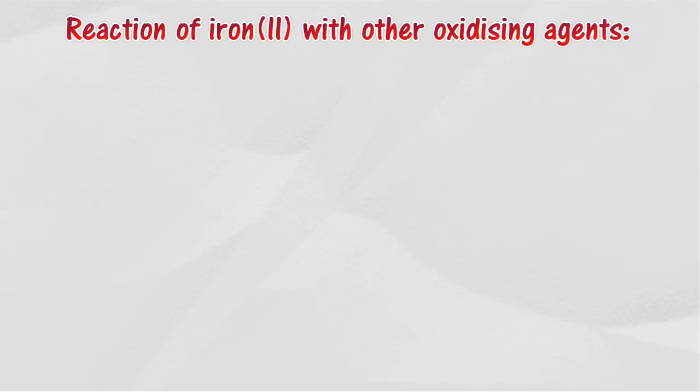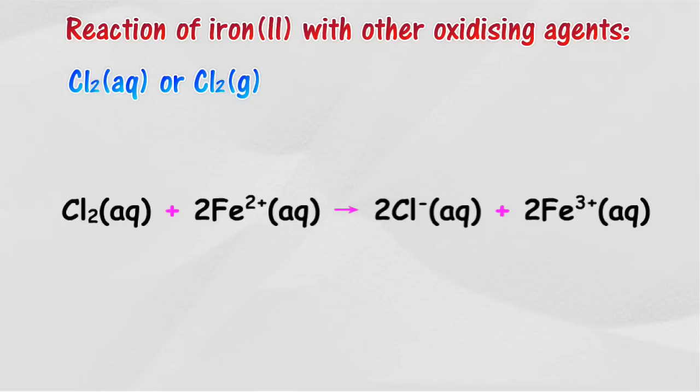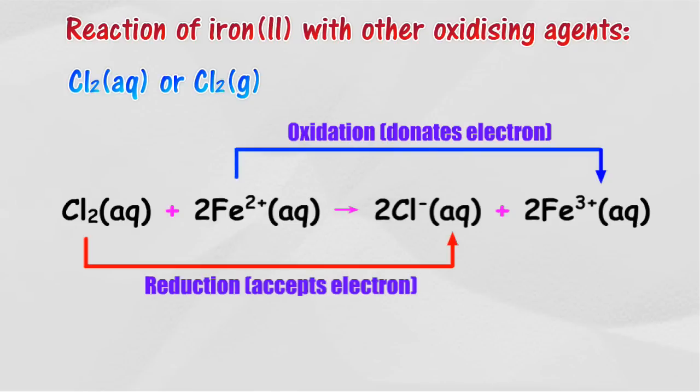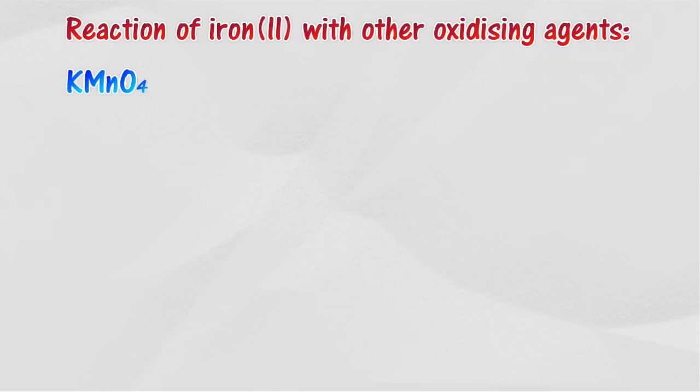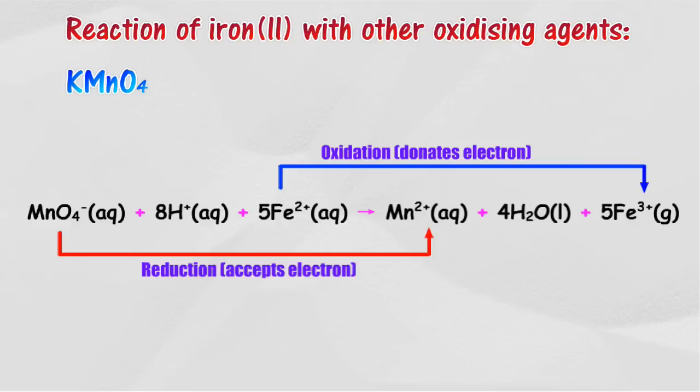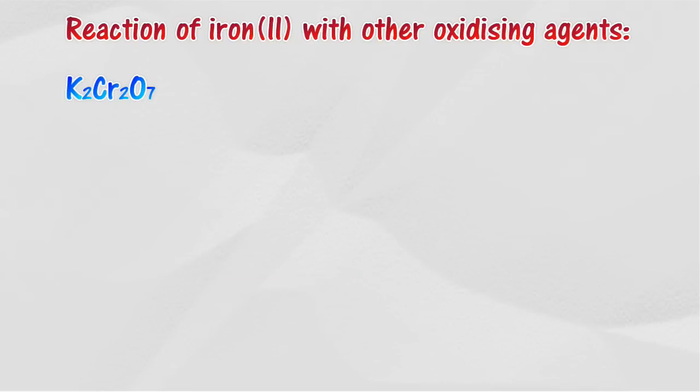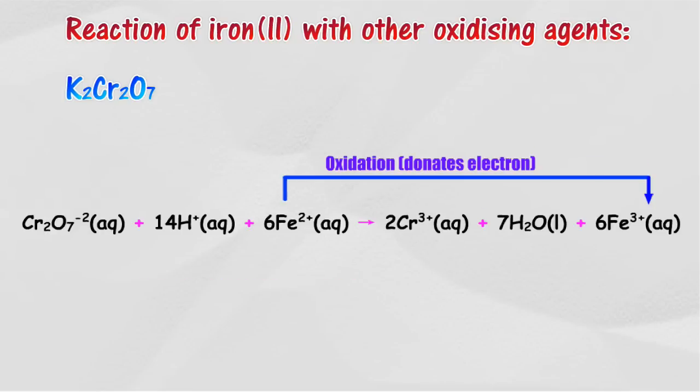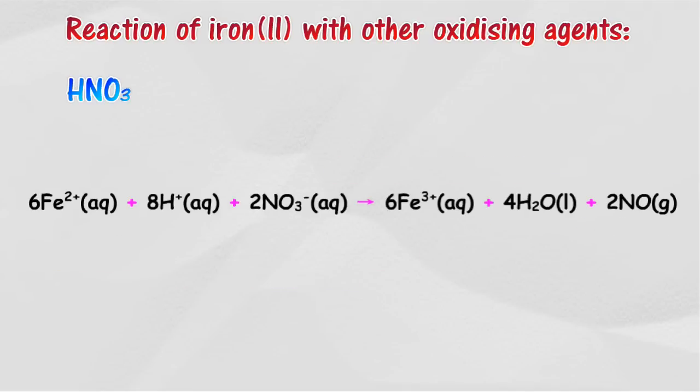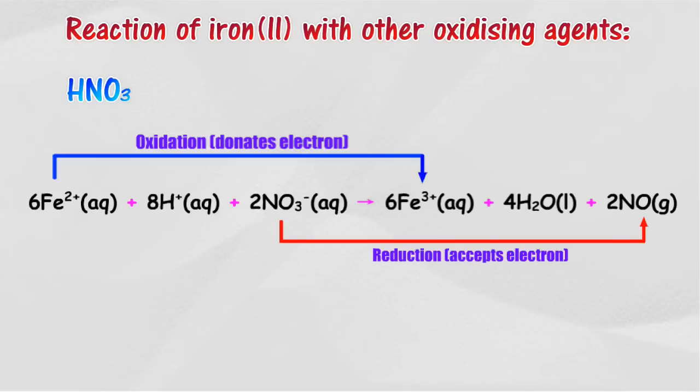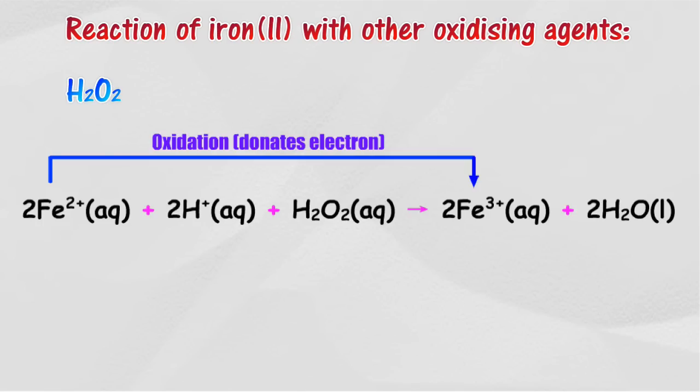Other oxidizing agents can be used to replace bromine water for the change of Fe2+ ion to Fe3+ ion. They are chlorine water or chlorine gas, acidified potassium manganate(VII) solution, acidified potassium dichromate(VI) solution, concentrated nitric acid, and acidified hydrogen peroxide.